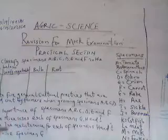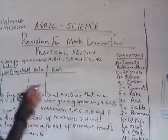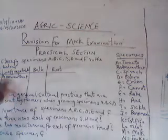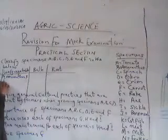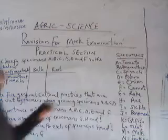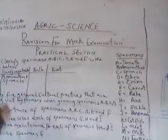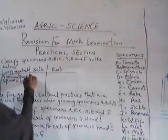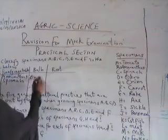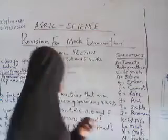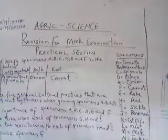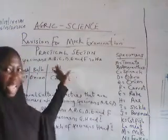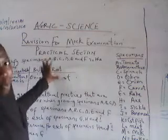Specimen A — tomato — belongs to the fruit class. Specimen B — amaranthus — goes in the leafy vegetable column because it is a leafy vegetable. Specimen C is also a leafy vegetable; insert it there. Specimen D — okra — also belongs to the fruit class. Onion belongs to the bulb group, so you put onion there. And the last one, carrot, is a root vegetable. What most of you did was just put 'Specimen A' or 'Specimen D' inside the table, which is not allowed for this type of question.